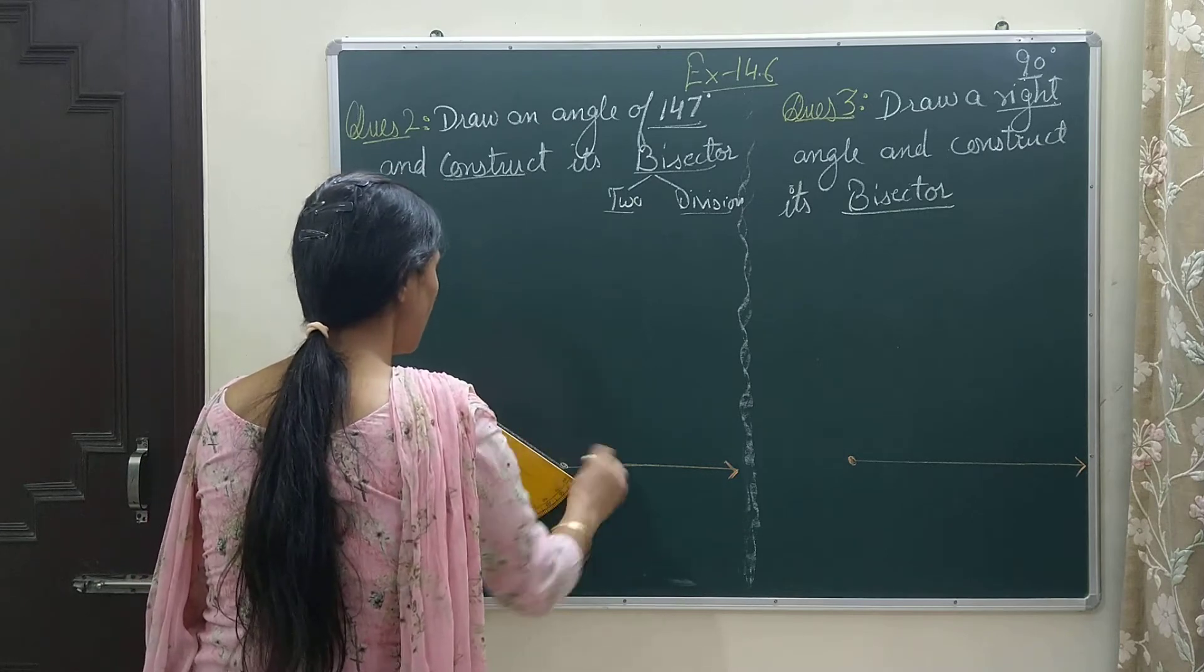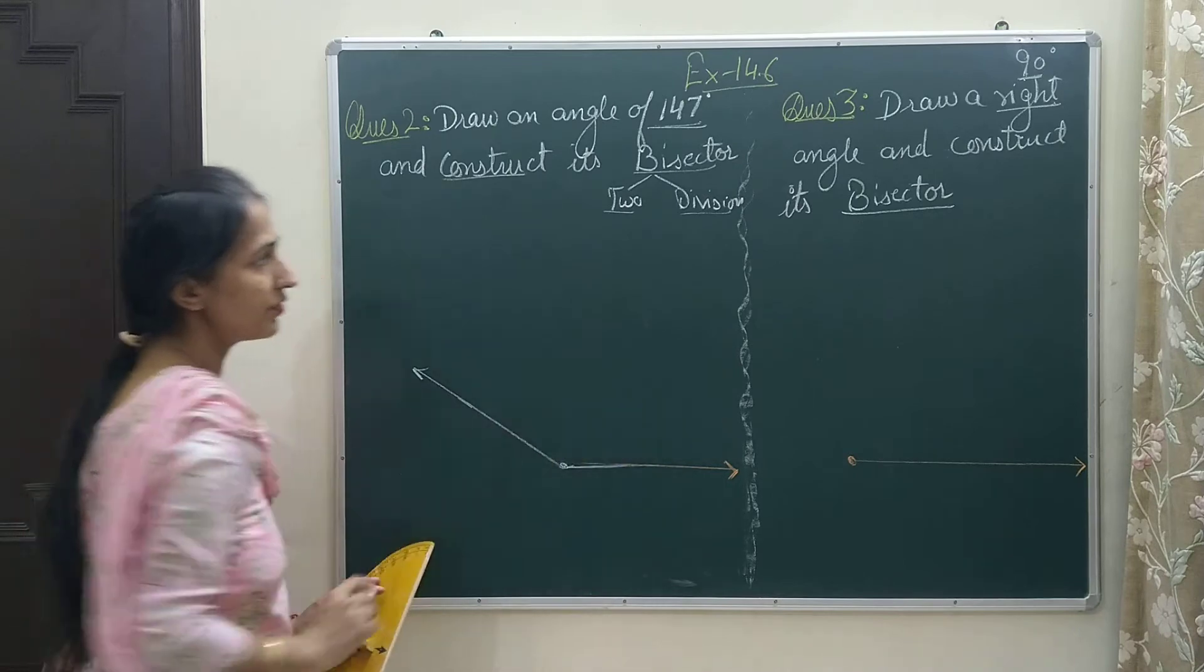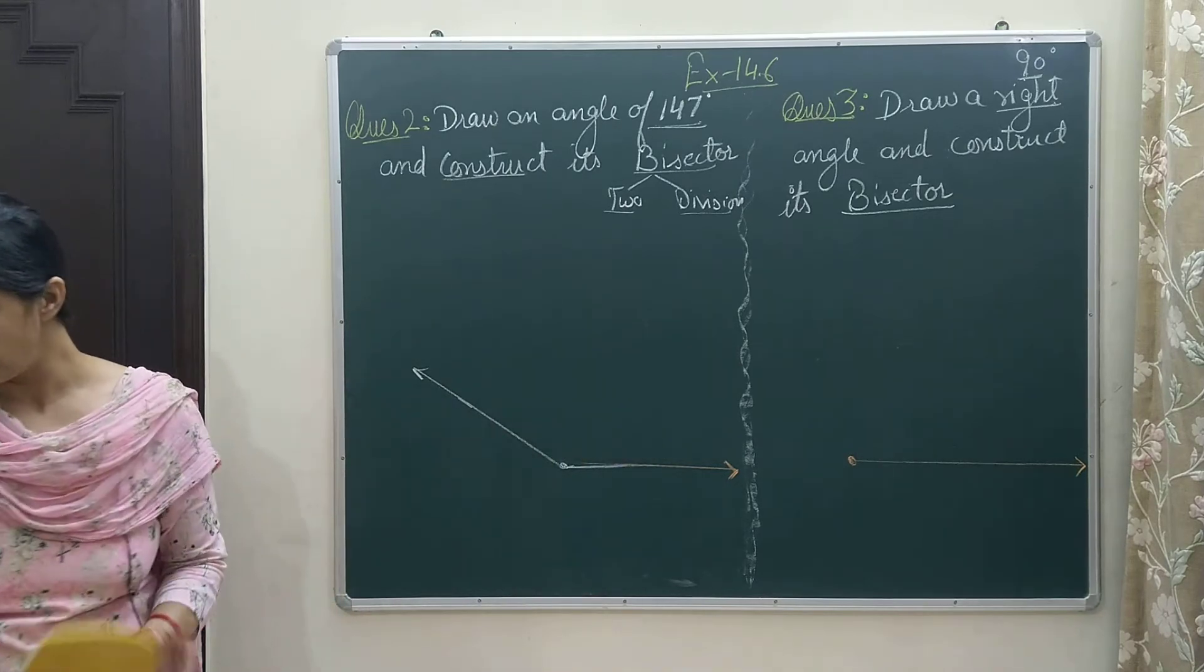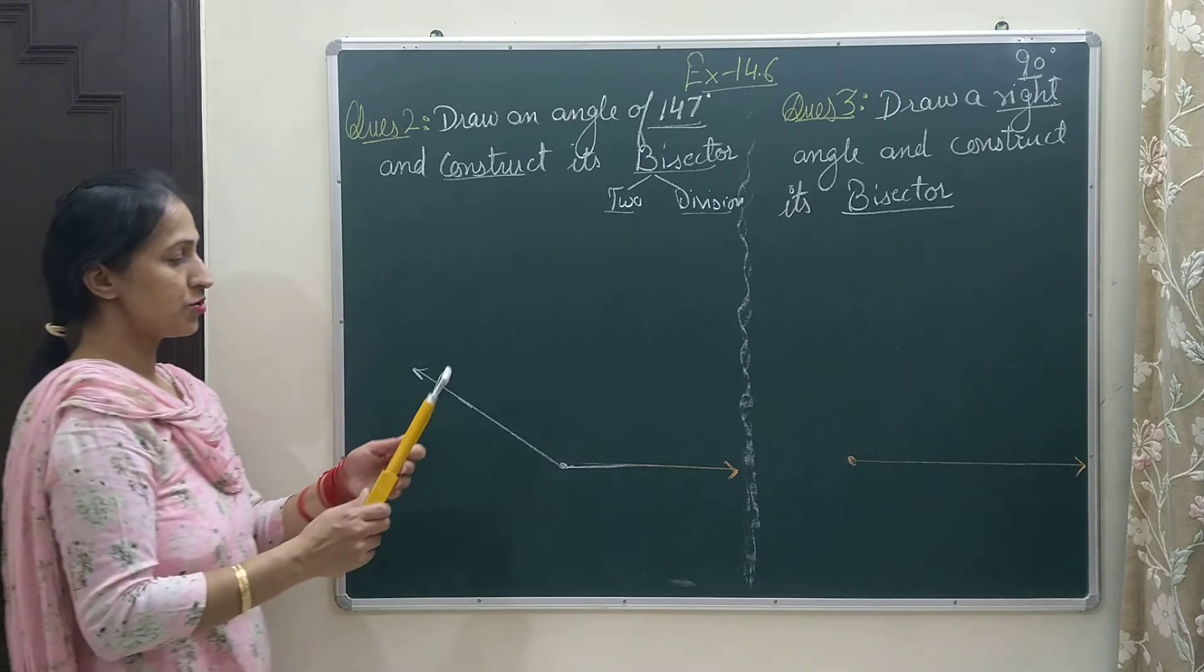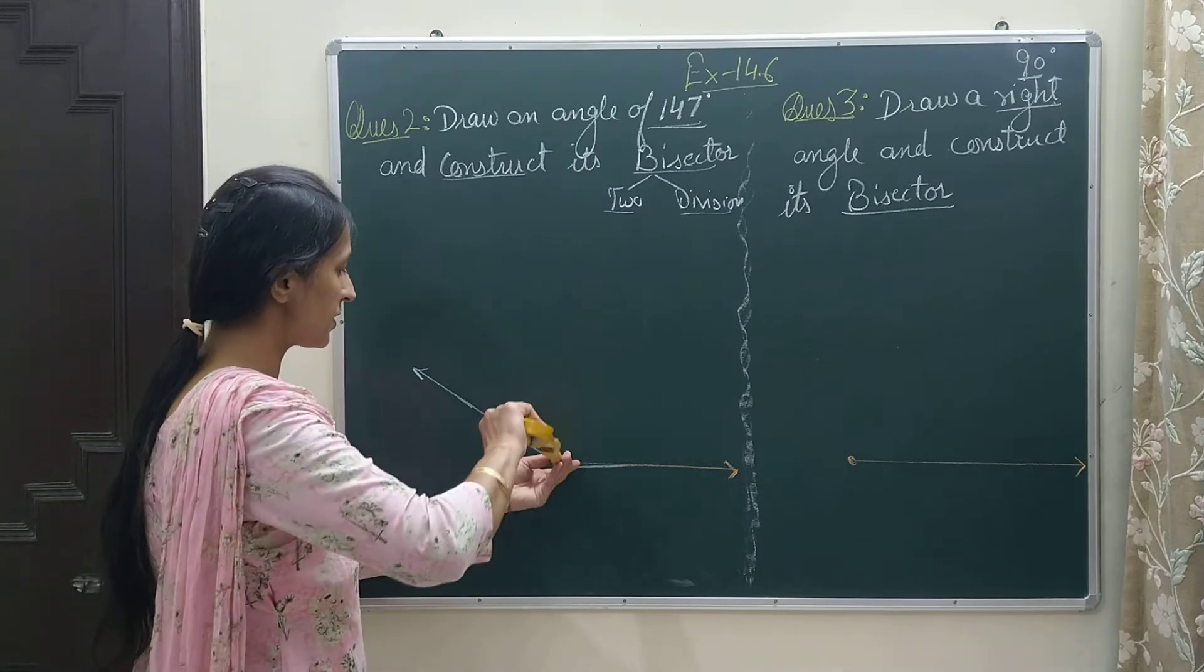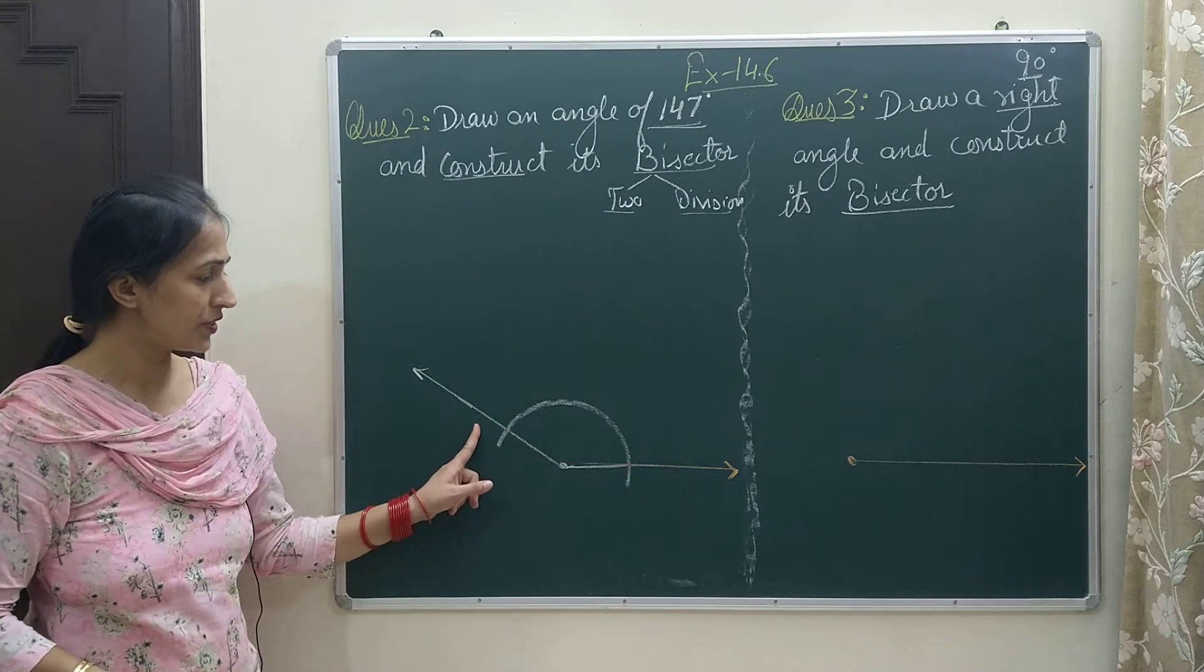So here 147 is drawn. Now I am going to bisect it. For that I will draw a semi-circular arc, and this arc meets 0 degrees and 147 degrees at two points, and I am marking these with dots.